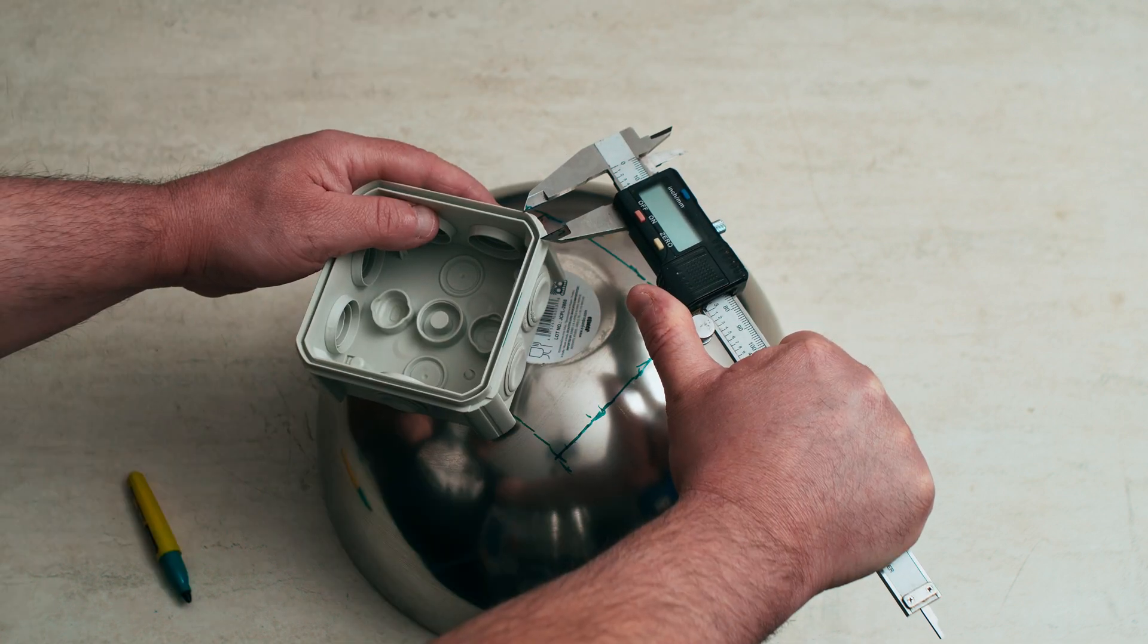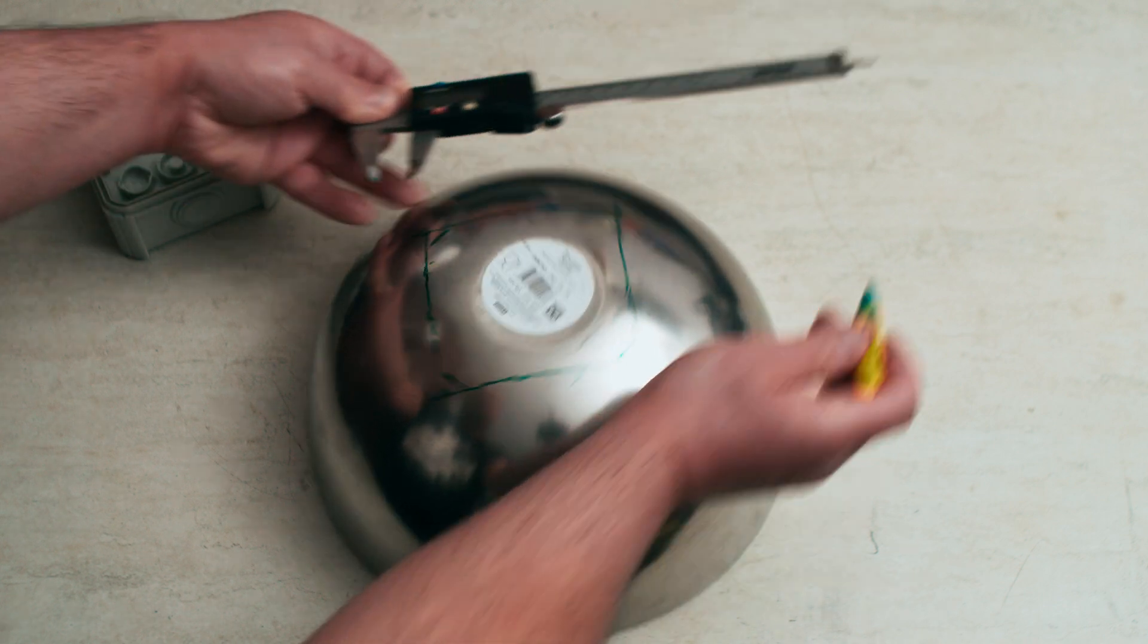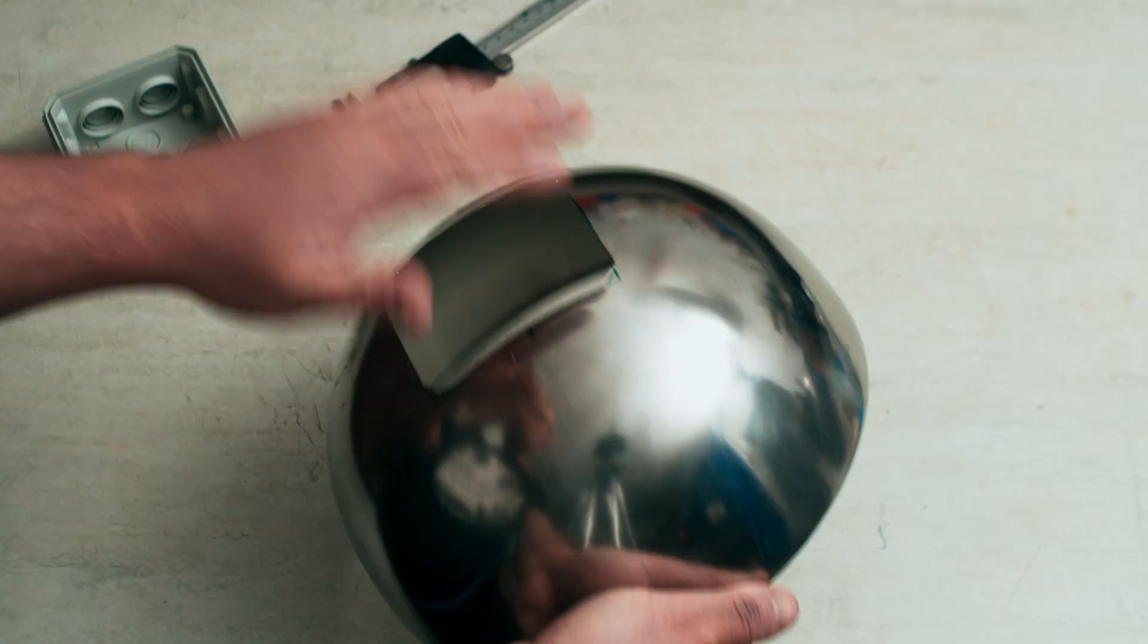Finally, we measure the 45 degree corner sides and mark those on the bowl too. After cutting and filing, we end up with something like this.